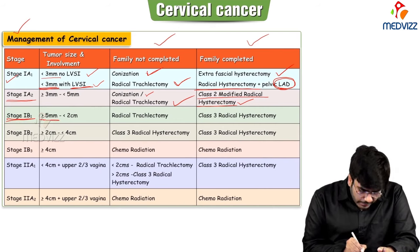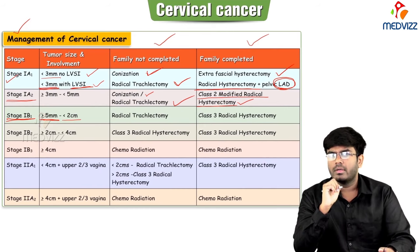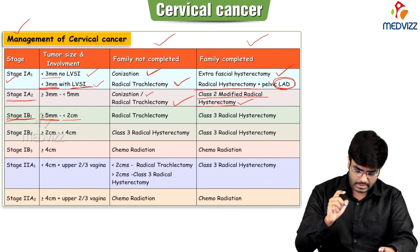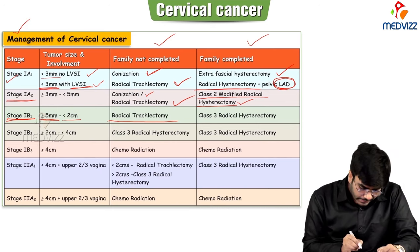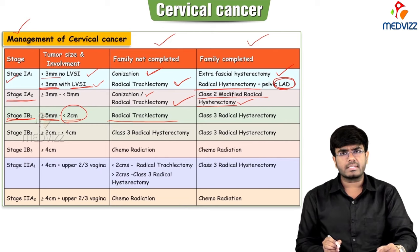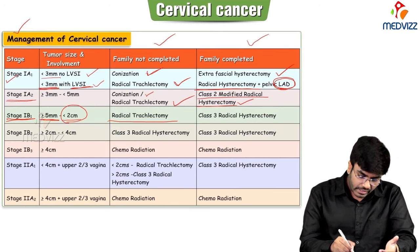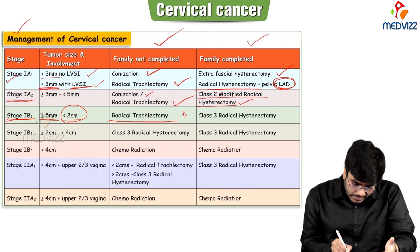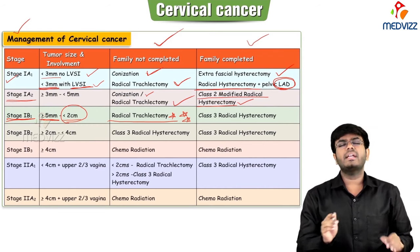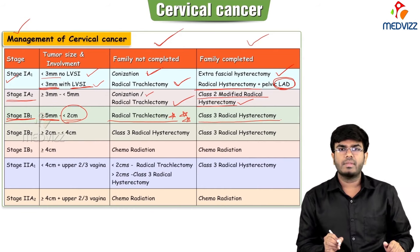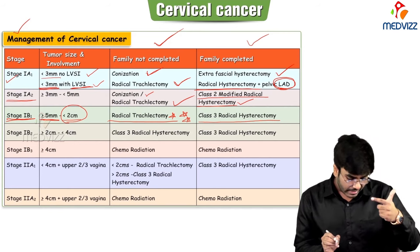Stage 1b1: stromal invasion greater than 5 mm, cancer size less than 2 cm. Since size is less than 2 cm, fertility can be conserved. If family not completed: radical trachelectomy. If family completed: class 3 radical hysterectomy. Summary so far — stage 1a1: extrafascial hysterectomy. Stage 1a2: class 2 modified radical hysterectomy. Stage 1b1: class 3 radical hysterectomy.